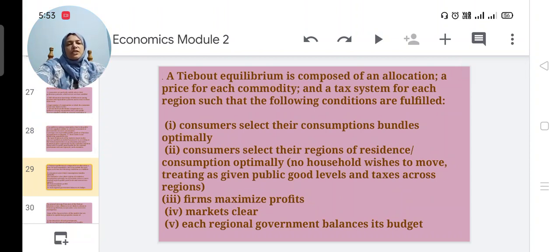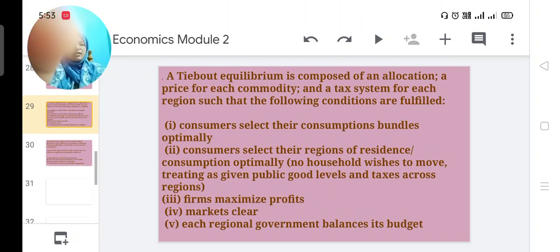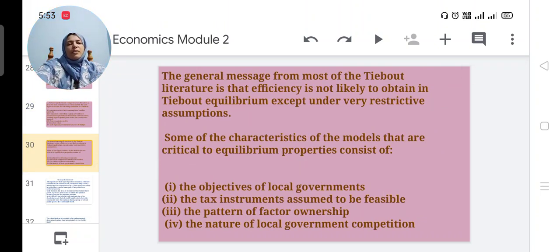Firm along with it a public goods bundle for the regional government and one region for each consumer. A Tiebout equilibrium is composed of an allocation, price for each commodity, and a tax system for each region such that following conditions are fulfilled: First, consumers select their consumption bundle optimally. Second, consumers select their region of residence, that is consumption, optimally. Third, firms maximize profit. Fourth, market is clear. Fifth, each regional government balances its budget.